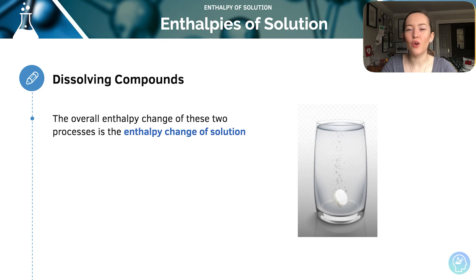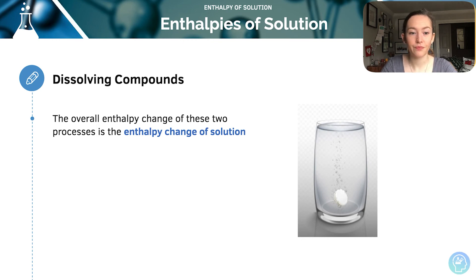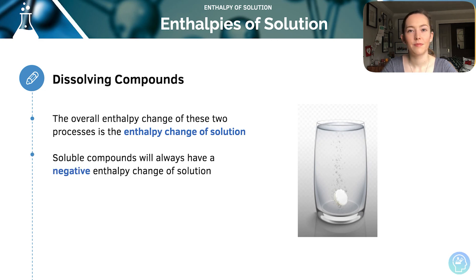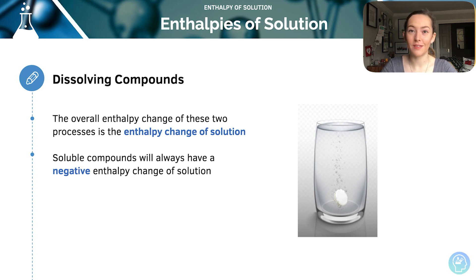It's a balance between those two values whenever we calculate the overall enthalpy change. The overall enthalpy change is, of course, the enthalpy change of solution. For a solution to dissolve, the energy given out must be equal to or greater than the energy taken in. That means the enthalpy change of solution is always a negative value — it's always an exothermic process. And the more exothermic the value, the more soluble the compound is.